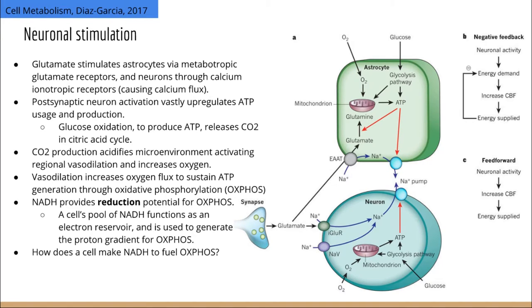Glucose when imported is oxidized into CO2 and its high-energy electrons end up on NADH. This occurs first in the cytoplasm through glycolysis, which produces a little bit of ATP and a little bit of NADH and results in the production of pyruvate. Cytoplasmic pyruvate is then transported into the mitochondria where the citric acid cycle tears the pyruvate into its component electrons and CO2, which is a waste product that diffuses out of the cell.